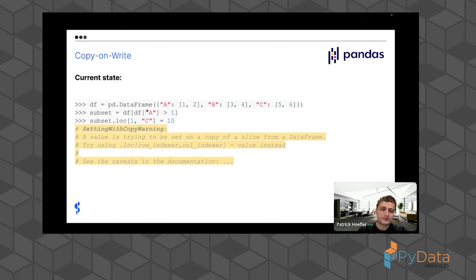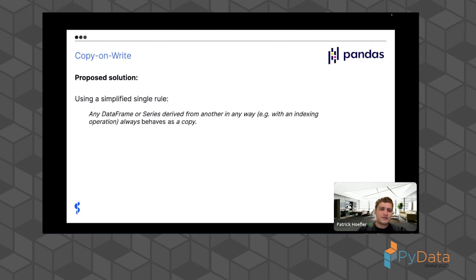Most pandas users will recognize this: you have a dataframe, filter it for a subset of rows, then update the subset using loc or iloc, and you get the SettingWithCopyWarning — which basically means the dataframe will not be updated, only the subset. Most people don't care about this distinction, so it's just very noisy — a false positive. This created a lot of confusion. The SettingWithCopyWarning docs page is actually one of the most visited pages in the pandas documentation, which was concerning — that's why we implemented copy-on-write.